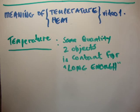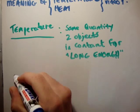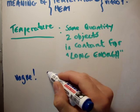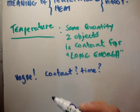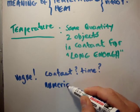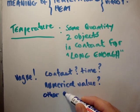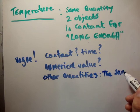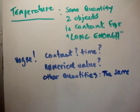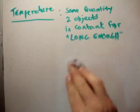You should immediately have some questions. This is a very vague description of temperature, because it's definitely not a definition. The reason it's vague is because, well, what does contact mean? For how long? What is the numerical value of temperature? There are also other quantities which will also turn out to be the same when two objects have been in contact for long enough. So this is a pretty vague description of what temperature is, and I'm not going to go into much more detail this time, because this is just a general description.